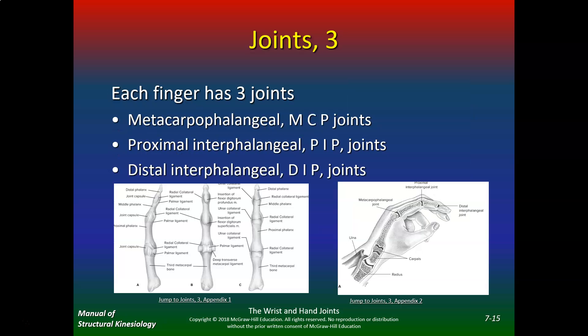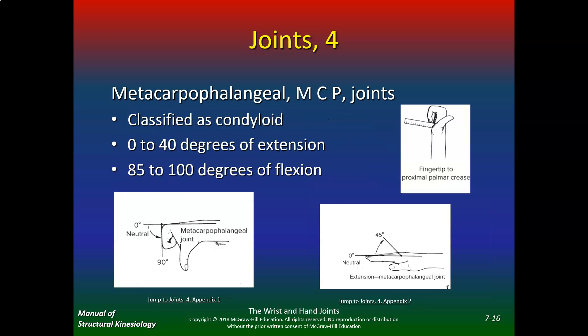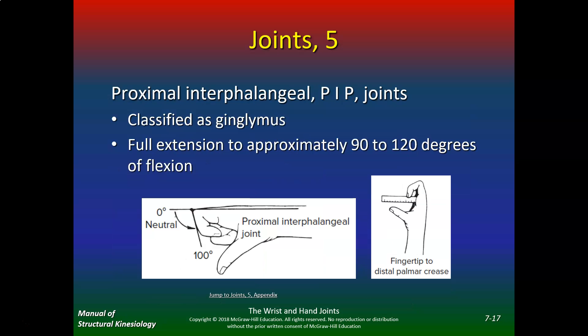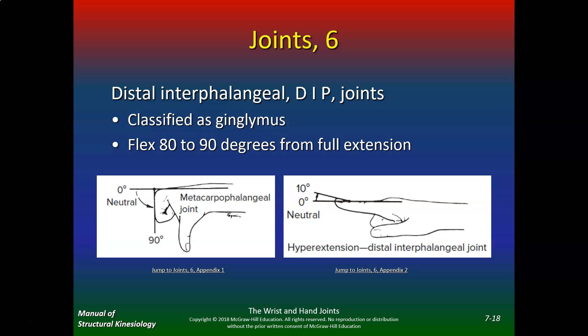Each finger has three joints: the MCP joint, the proximal interphalangeal (PIP) joint, and the distal interphalangeal (DIP) joint. MCP joints are classified as condyloids with 0–40 degrees of extension and 85–100 degrees of flexion. PIP joints classified as ginglymus have full extension to approximately 90–100 degrees of flexion. Knowing these degrees is important — if a patient can't achieve them, you know what to work on.